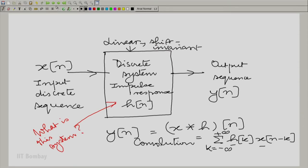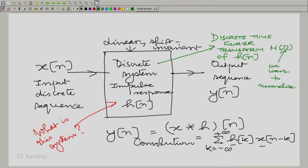We are saying that in this system that we had here, essentially the Fourier, the discrete time Fourier transform capital H of omega of the sequence h n. Well actually, we should be writing capital H of the small omega because we want to normalize.